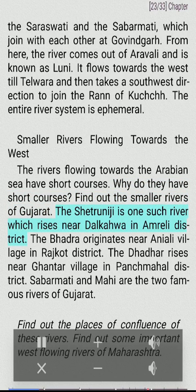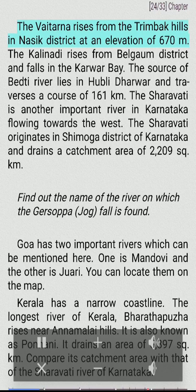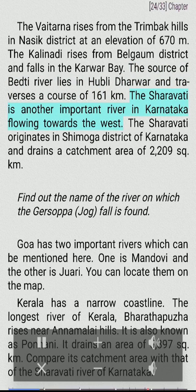Smaller rivers flowing west in Gujarat include the Shetrunji, which rises near Dalkawa in Amreli district; the Bhadra, originating near Anili village in Rajkot district; and the Dadar, rising near Ghantar village in Panchmahal district. Sabarmati and Mahi are the two famous rivers of Gujarat. In Maharashtra, notable west-flowing rivers include the Vaitarna, which rises from Trimbak hills in Nashik district at 670 meters, and the Kalanadi, rising from Belgaum district and falling into Karwar Bay.